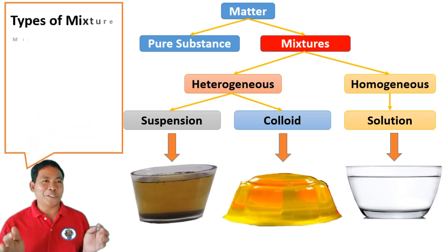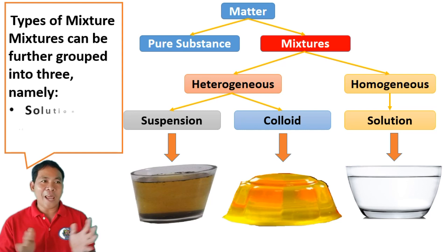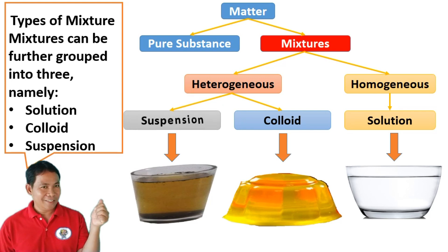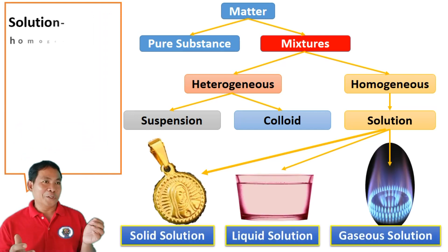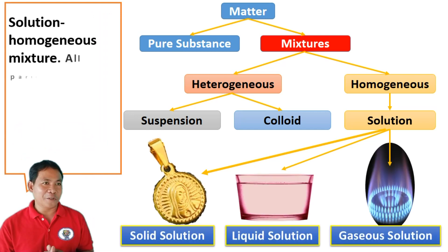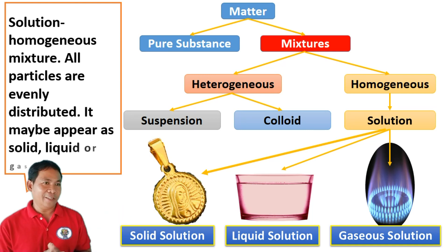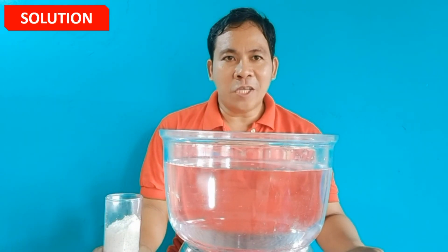Mixtures can be further grouped into three types: solution, colloid, and suspension. A solution may appear as solid, liquid, or gas. An example of a homogeneous mixture is salt water — seawater is a homogeneous mixture of salt and water.